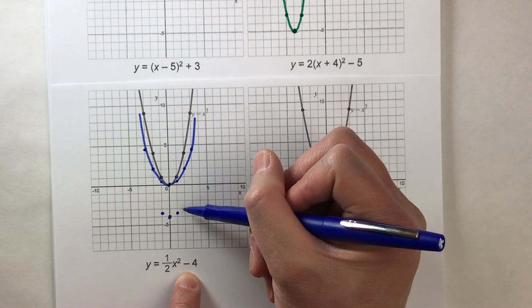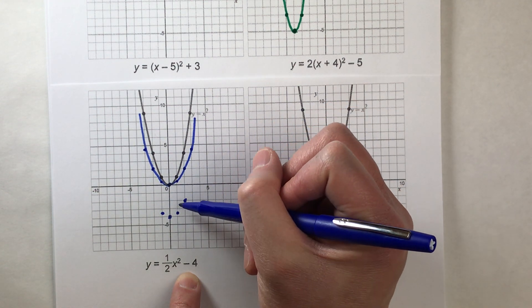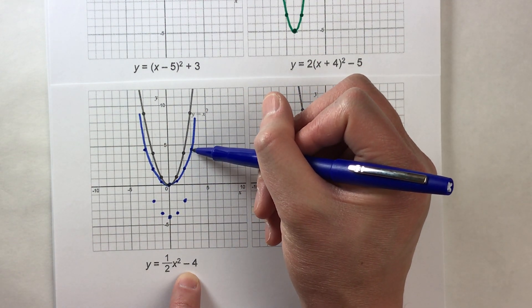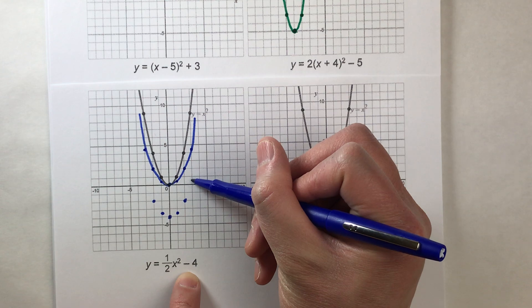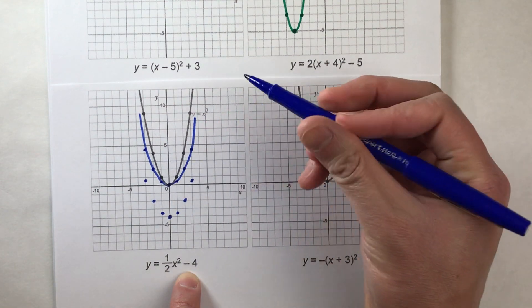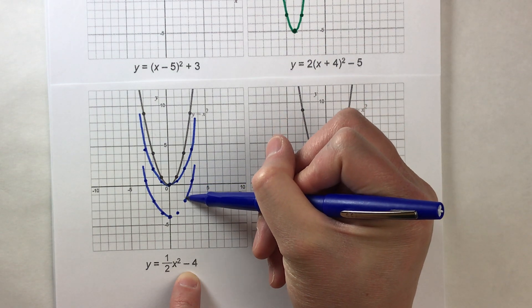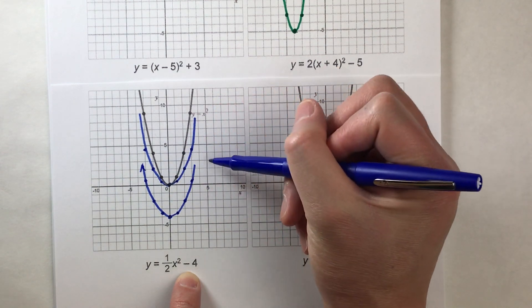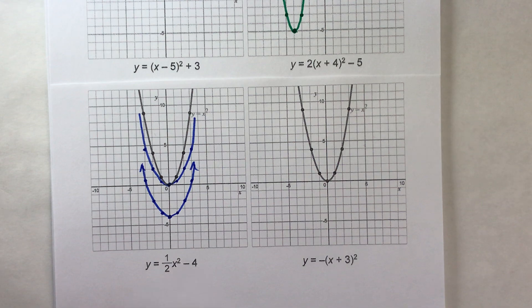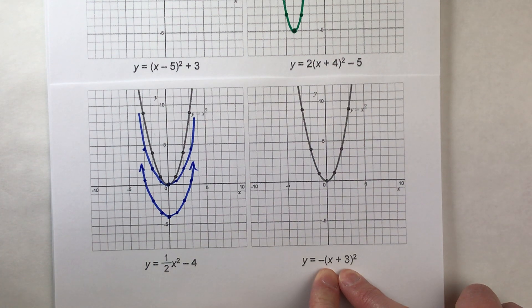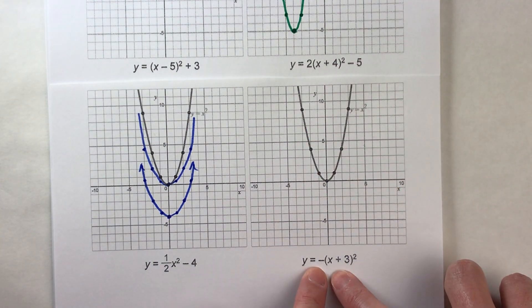The half-step point stays at a half. This one was two up. And this one was four and a half. So the points go to: half, two, and four and a half above the new vertex position. There we go — that gives us our compressed and shifted parabola. This one has a horizontal shift of three to the left.